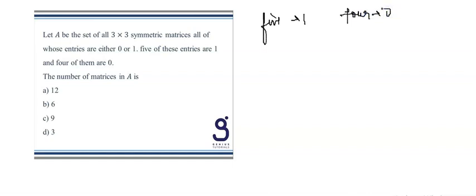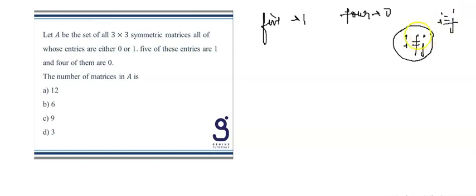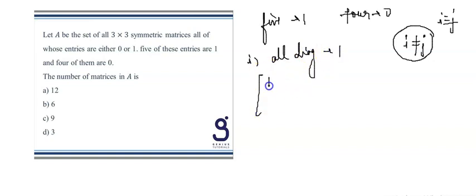Since the matrix is symmetric, we must have an even number of zeros for i ≠ j entries — that is, the off-diagonal elements. For diagonal elements, i equals j. So for i ≠ j, we must have an even number of zeros. We have two cases. In the first case, all principal diagonal elements are 1.